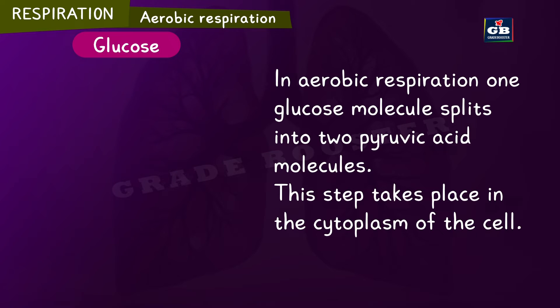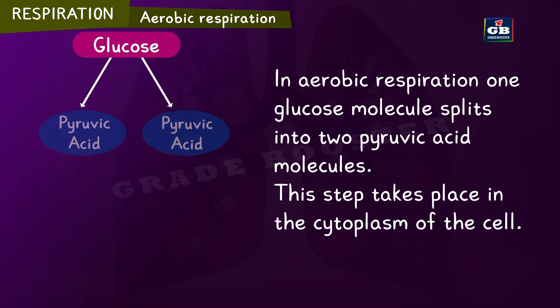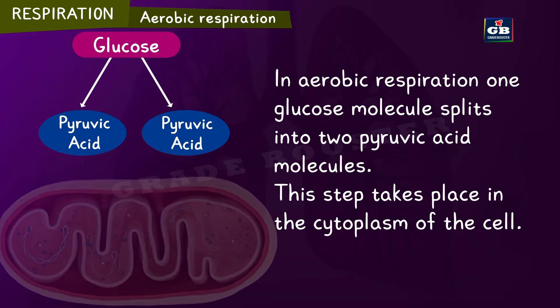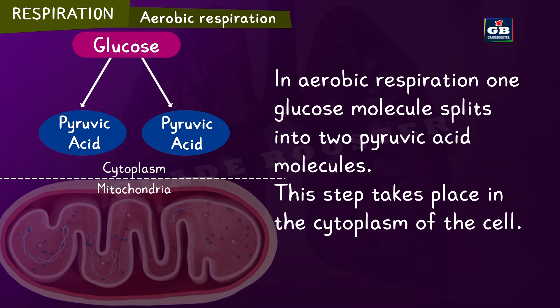In aerobic respiration, one glucose molecule splits into two pyruvic acid molecules. This step takes place in the cytoplasm of the cell.